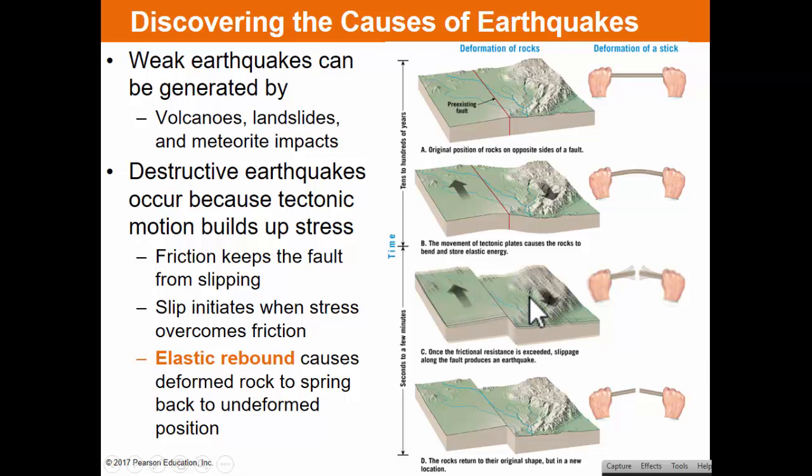This whole process is referred to as elastic rebound. Weak earthquakes can be generated by volcanoes, landslides, or perhaps even meteorite impacts. But larger, more destructive earthquakes occur because of tectonic forces — the pressures built up by tectonic force. Friction keeps the fault together. Slip initiates when stress overcomes friction. Elastic rebound is the rock going from being deformed and misshapen to snapping back to its original shape — and it's that snap back that is the earthquake.